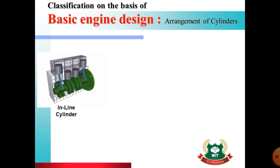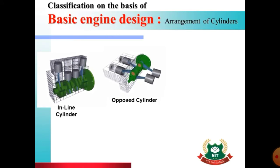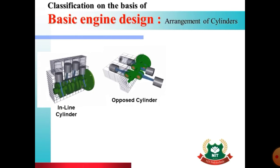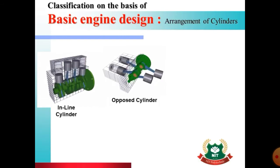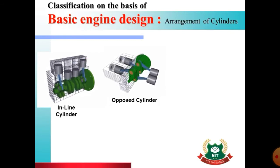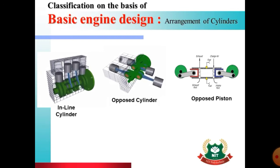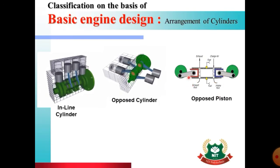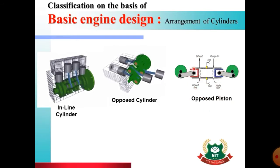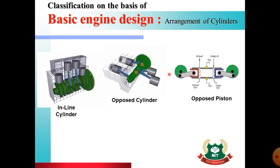The inline arrangement is the most common type used in most cars, buses, and trucks. The next arrangement is known as opposed cylinder, in which cylinders are arranged opposite to one another while the crankshaft is arranged in the center. There is also the opposed piston engine, where a single cylinder is used but two pistons are mounted in the same cylinder.